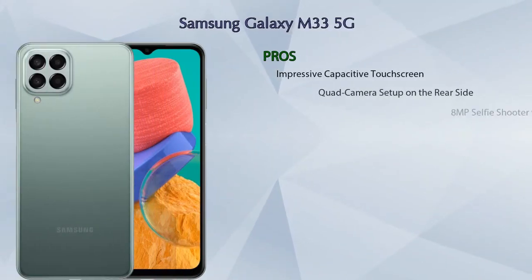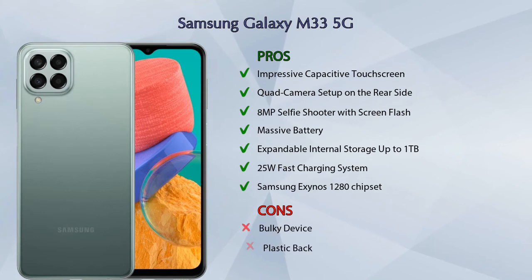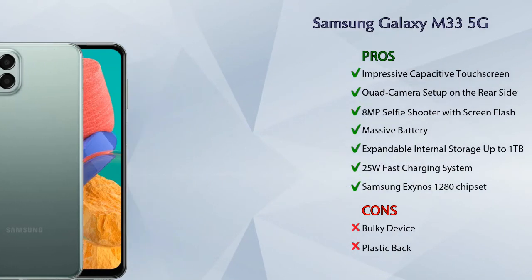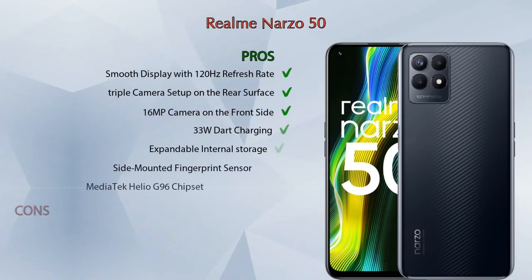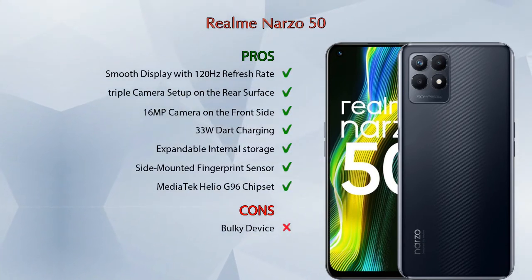Friends, now let's talk about pros and cons. The Samsung Galaxy M33 5G has seven pros and two cons. The Realme Narzo 50 has seven pros and one con.